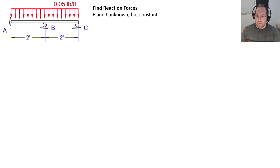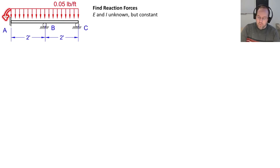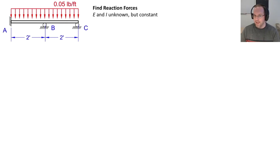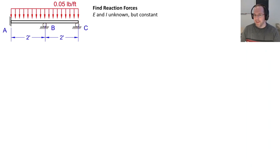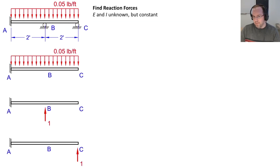To increase the degree of indeterminacy by one, I've changed point A from a pin to a fixed end, adding an unknown moment at A. The degree of indeterminacy is now two, so I must remove two boundaries and apply two constraint equations. I'll remove supports B and C to work with just a cantilever, which makes looking up displacements in a table straightforward. This gives me three systems to analyze.